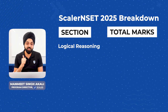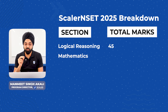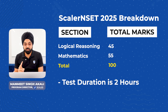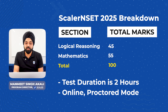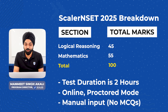We now have two sections. One is logical reasoning, which has a total of 45 marks, and second is mathematics, which has a total of 55 marks, giving a total of 100 marks. The test duration is two hours. The format is an online proctored test and we don't have any MCQs — you have to input all your answers.